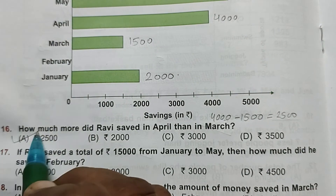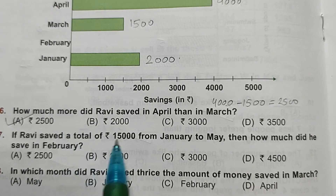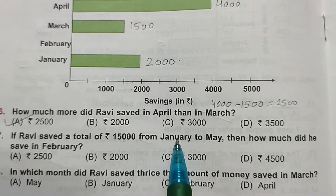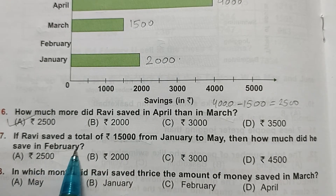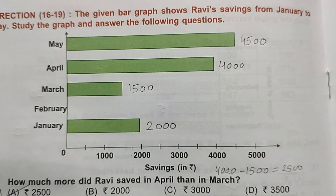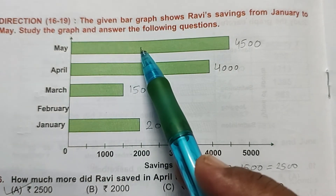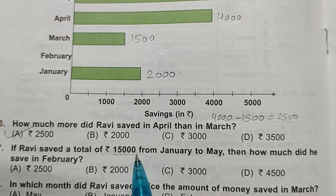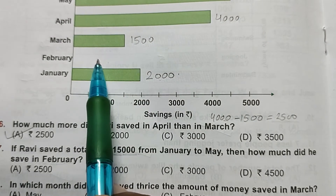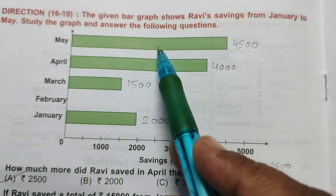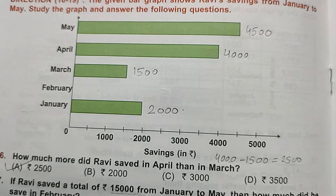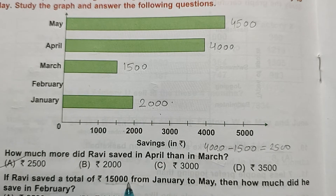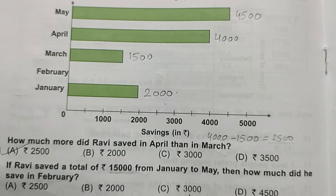Question 17: If Ravi saved a total of Rs. 15,000 from January to May, how much did he save in February? We know January = 2000, March = 1500, April = 4000, May = 4500. Adding these four: 2000 plus 1500 plus 4000 plus 4500 equals 12,000. So February savings = 15,000 minus 12,000 equals Rs. 3000. Option C is the answer.